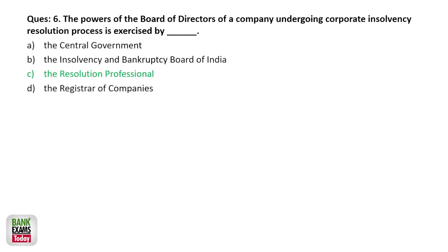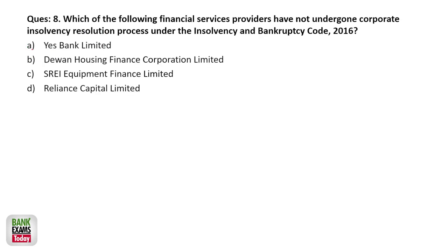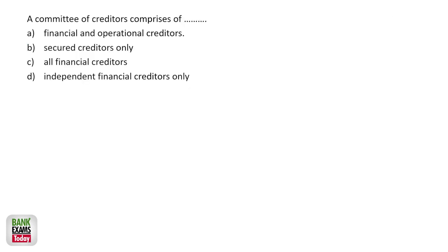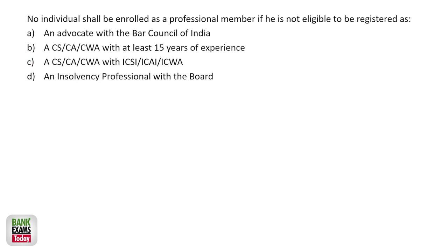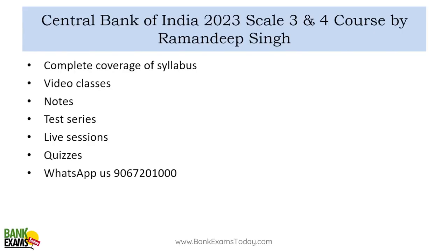In a liquidation process, workmen and employees of the company get the highest priority in distributing sale proceeds of the liquidation estate. A committee of creditors is comprised of all financial creditors. No individual shall be enrolled as a professional member if not eligible to be registered as an insolvency professional with the board — you need to pass the exam and take the license. A liquidator shall distribute the proceeds from realization to stakeholders within 90 days of receipt.